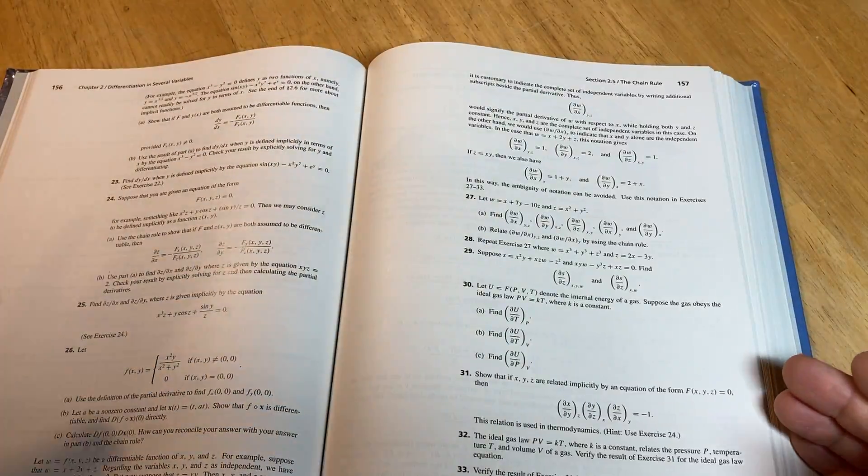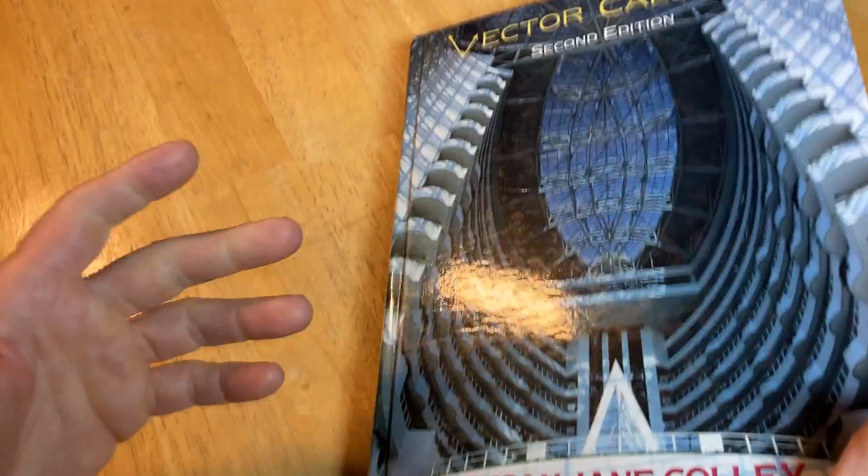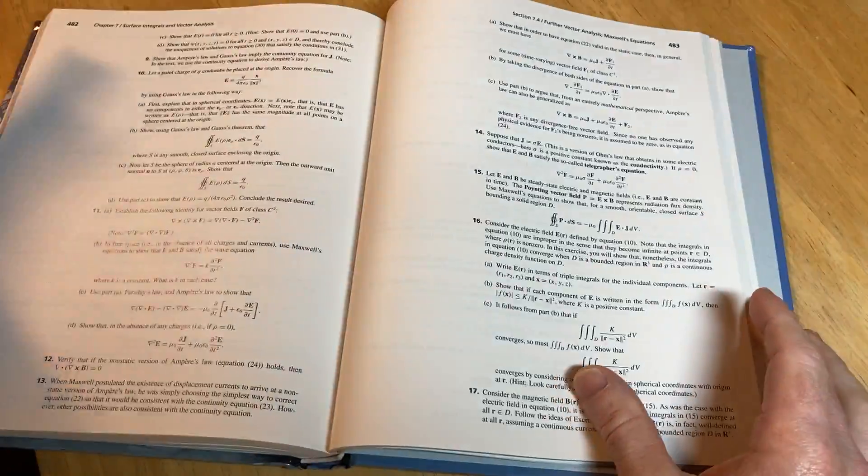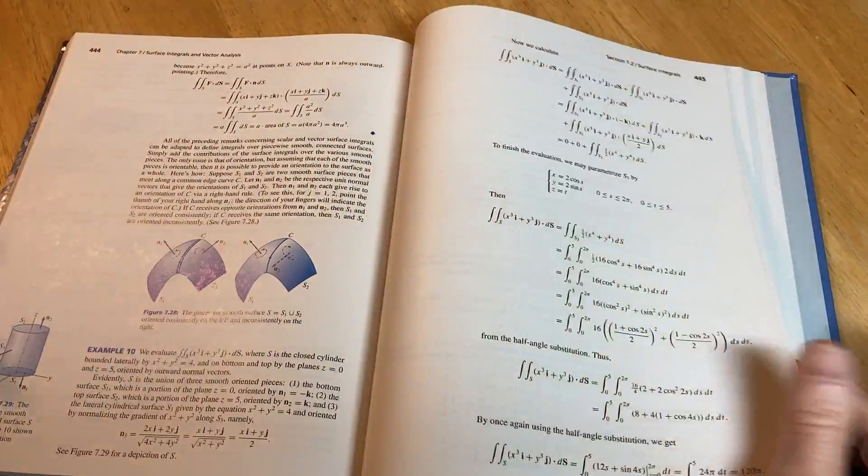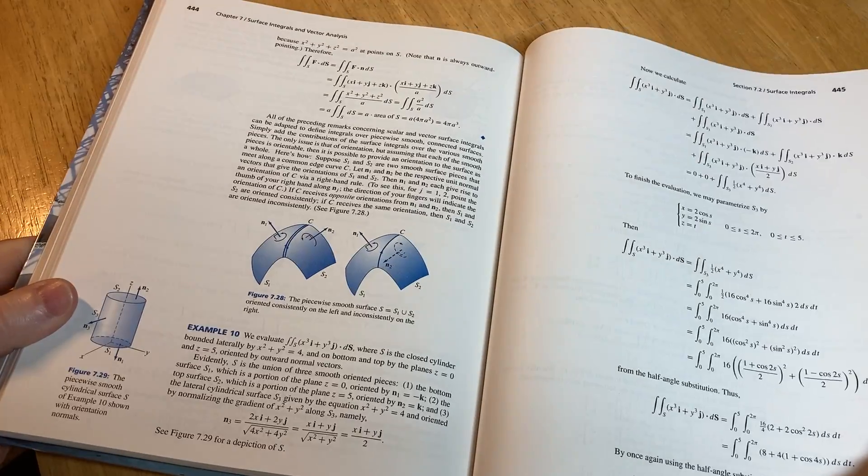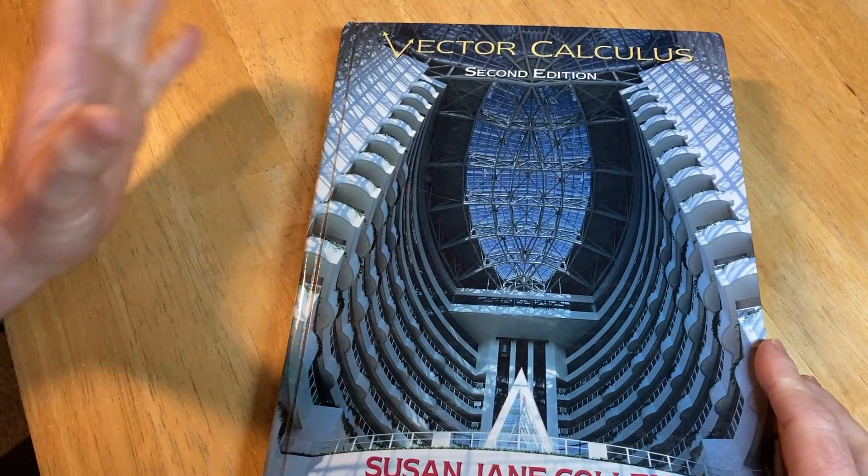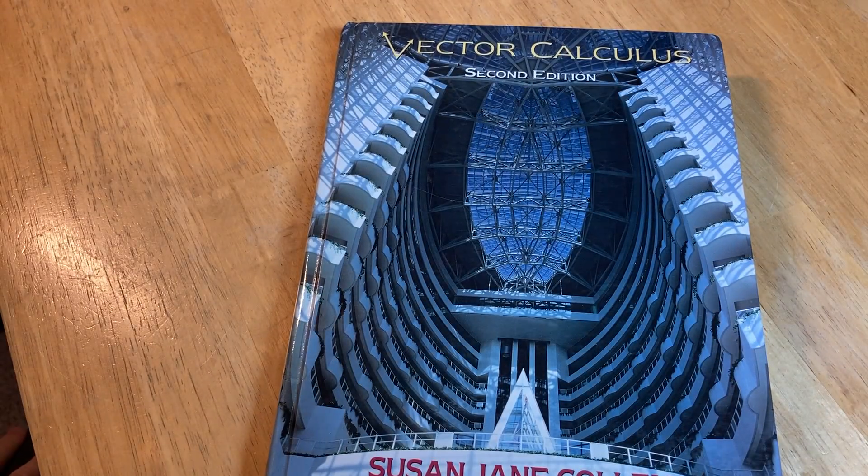But if you take away anything from this video, it's that this book is really unique. Susan Jankoli did a really good job. I use this mainly for Stokes theorem and stuff like that, and I thought it did a really good job with the explanations. And it's kind of unique. It's kind of fun to have a book on just vector calculus. That's not something you see every day. Anyways, until next time, keep doing mathematics.